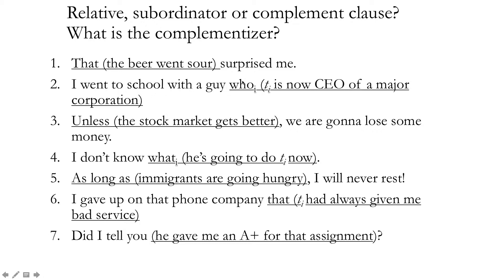'I went to school with a guy. He is now CEO of a major corporation.' I can relate those two sentences together because they share information — the guy I went to school with is the same guy who is now CEO. So I can say: 'I went to school with a guy who is now CEO of a major corporation.' This underlined clause is a relative clause. 'Who' is the complementizer. Learners often make the mistake of saying 'a guy who he is now CEO,' but you don't need to reduplicate the pronoun inside a relative clause since 'who' and 'he' refer to the same person.